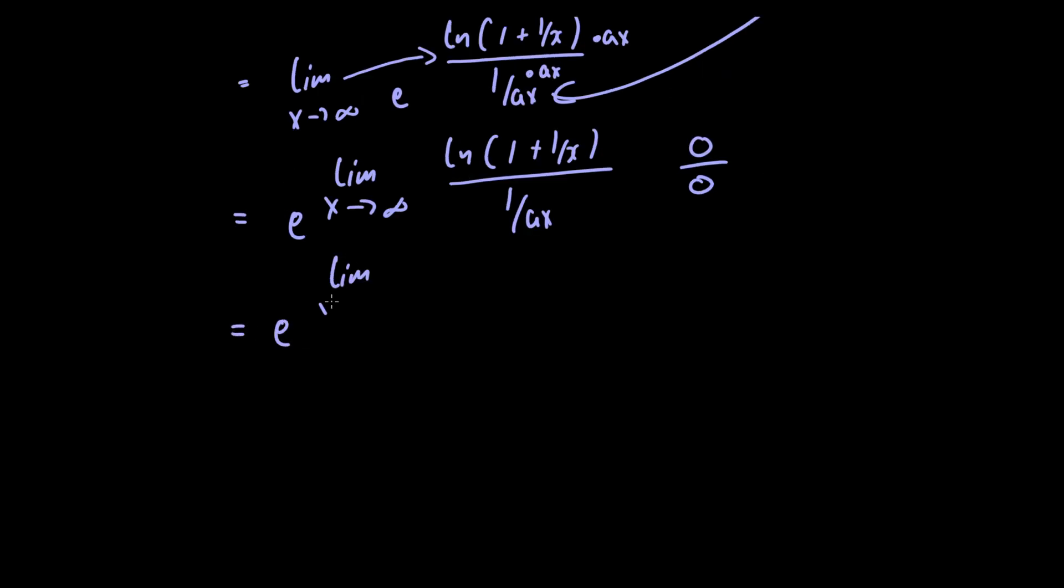So we have e raised to the limit as x approaches infinity. The derivative of the numerator is just minus 1 divided by x squared plus x. The derivative of the denominator is just minus 1 divided by a times x squared.